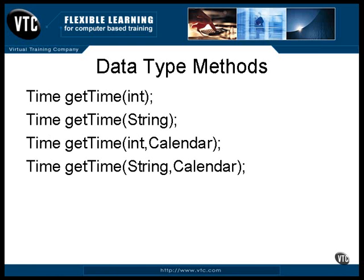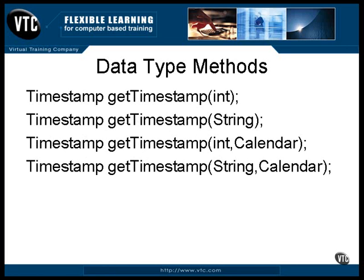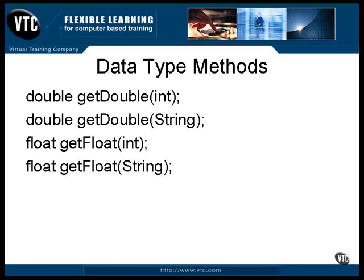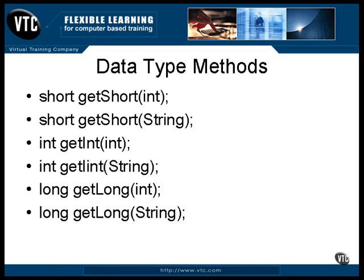You can do the same thing with a time object, and you can do the same thing with a timestamp object. These methods return values as real numbers. A double is a 64-bit real number, and a float is a 32-bit real number. These methods return the values as integers. A short is 16 bits, an int is 32 bits, and a long is 64 bits.